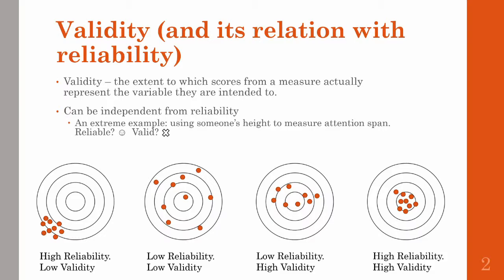Take these four bullseye targets as a way to think about this. Going from left to right, a measure could be really reliable but just completely miss the target — this is the height and attention span example. Something could have low reliability and low validity, this being the worst measurement of all. You could have low reliability but high validity, where you're tapping into the right construct, but scores just vary too much and aren't reliable. Finally, the best kind of measure has high reliability and high validity. This is what we strive for, and we can see that scores are similar and are right on target.